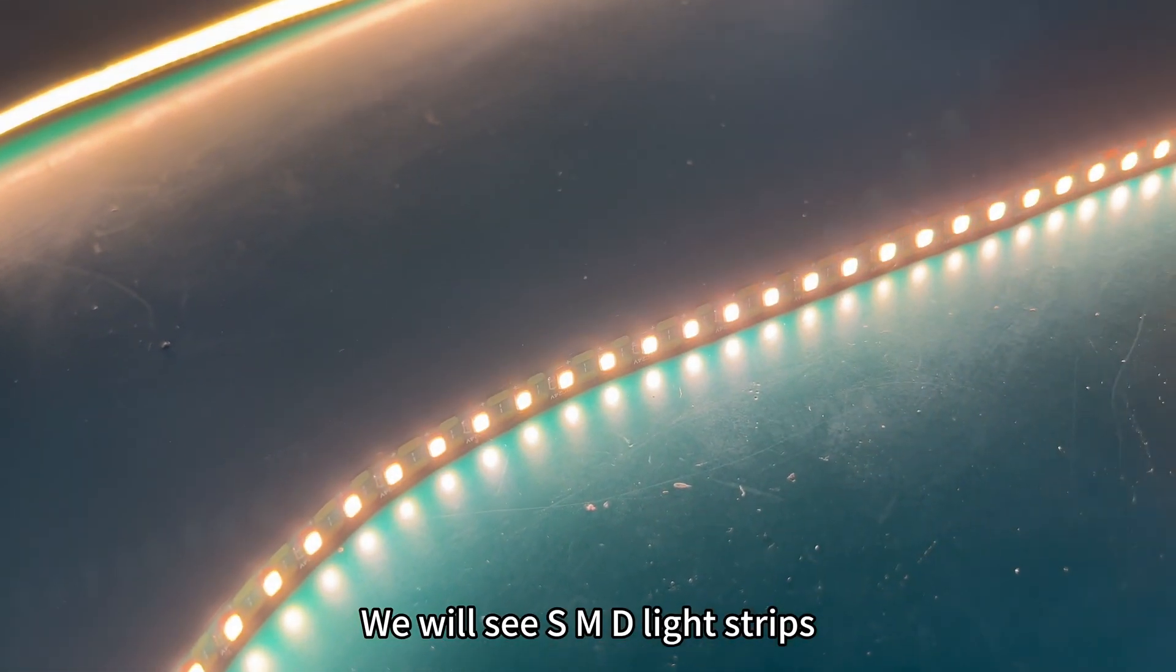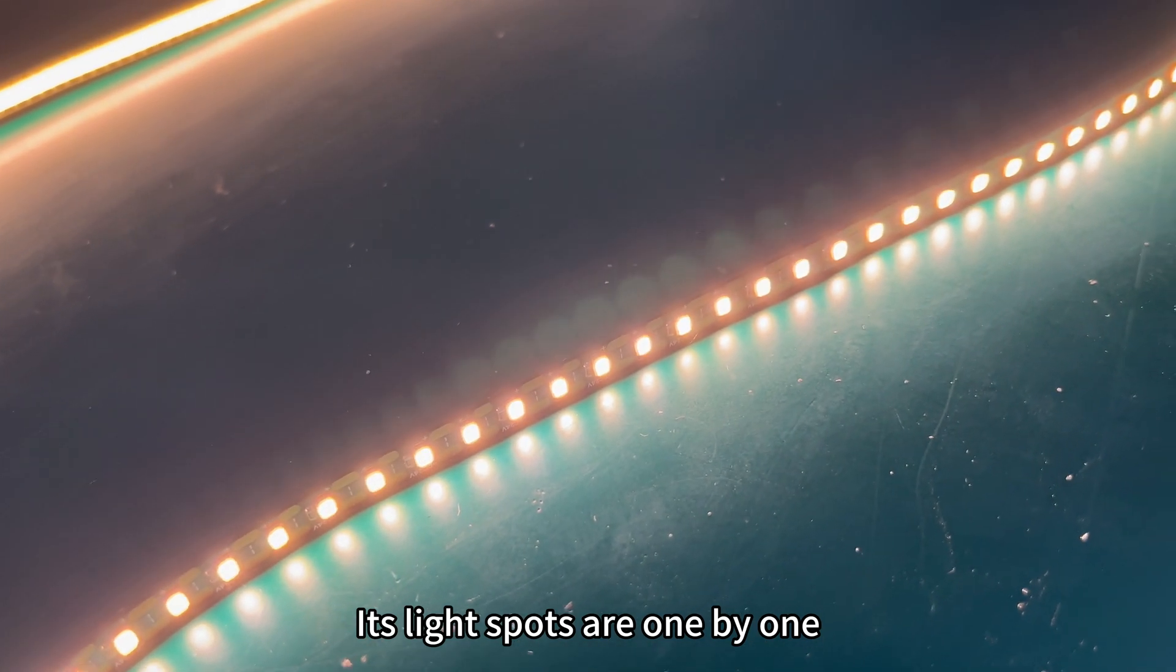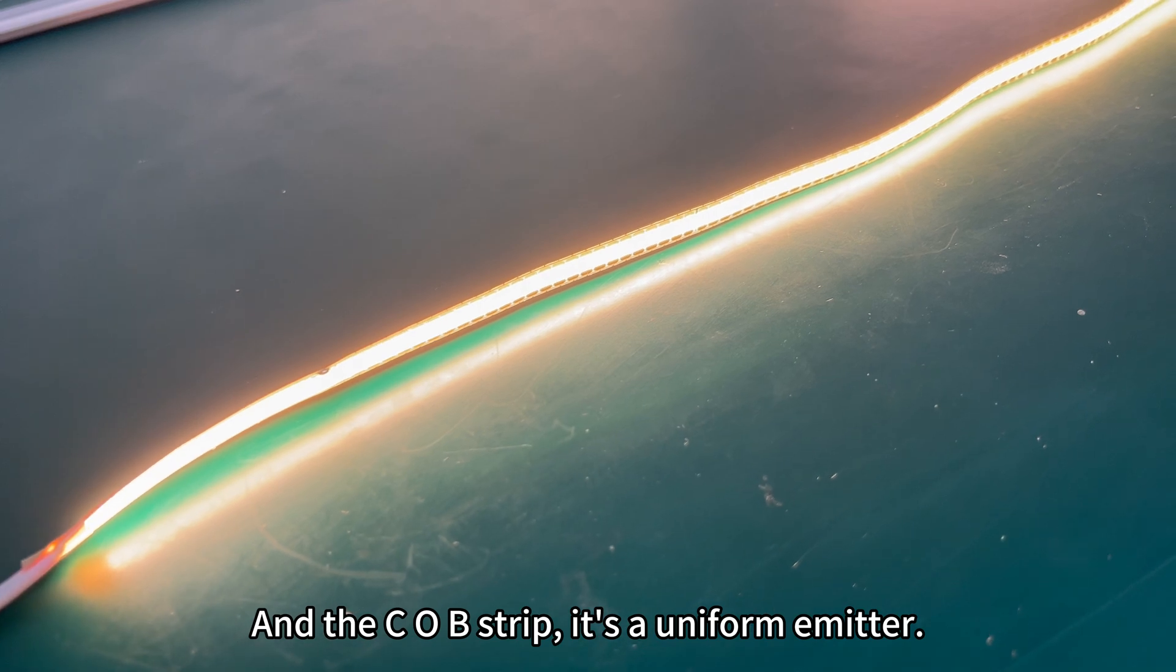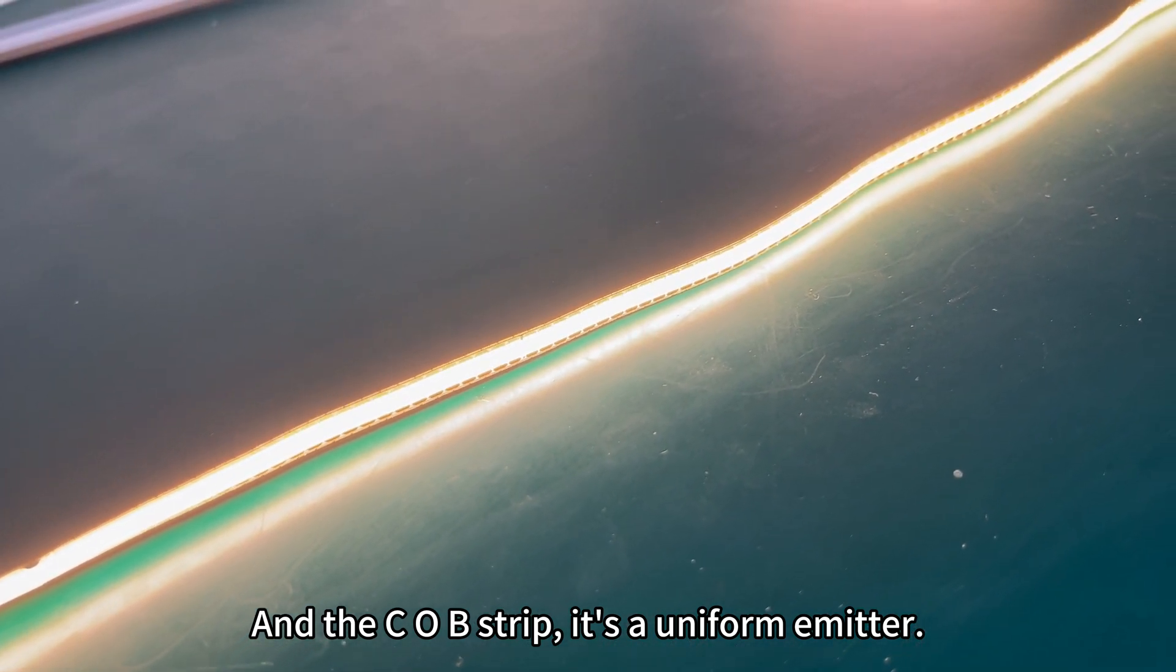We will see SMD light strips, its light spots are one by one. And the COB strip, it's a uniform emitter. It's continuous.